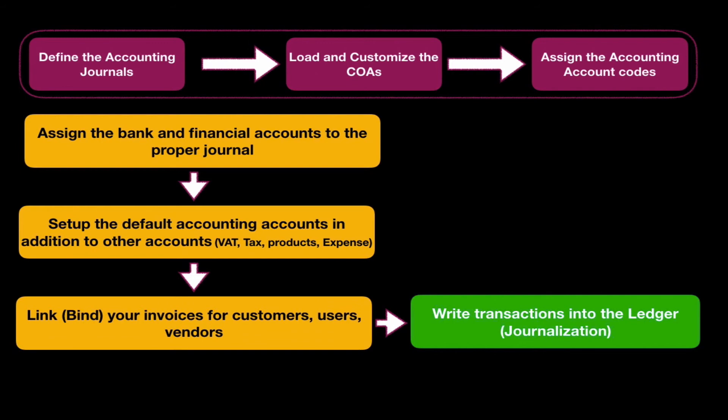After doing all these things, finally we will write the transactions into the ledger. We can do that by journalization in the menu as we saw before. This will allow you to export your financial data, have your ledger, your account balances, and reports — everything related to your financial transactions across business elements: customers, vendors, users, expense reports, salaries.